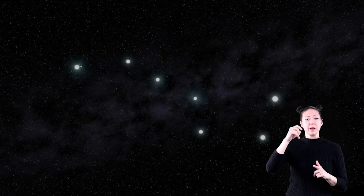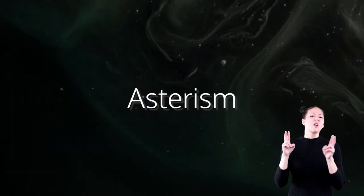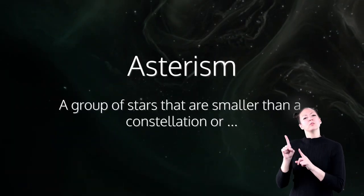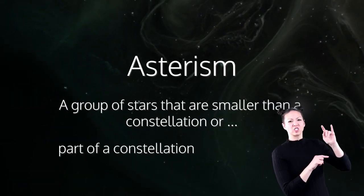The Big Dipper is not actually a constellation as some people think. It is called an asterism, which is a group of stars that are smaller than a constellation or are part of a constellation.